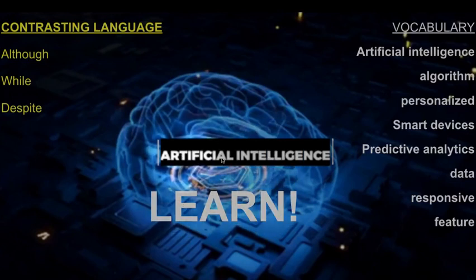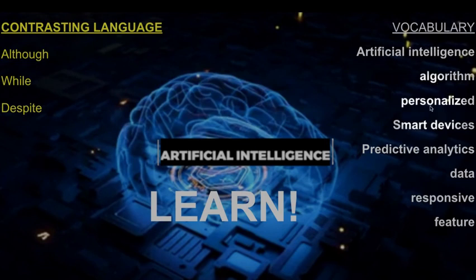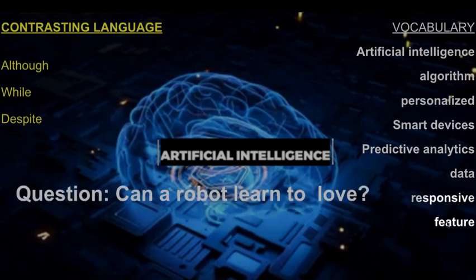Learn artificial intelligence contrasting language: although, while, despite. Vocabulary: artificial intelligence, algorithm, personalized, smart devices, predictive analytics, data, responsive, feature. Answer in the comments — can a robot learn to love?